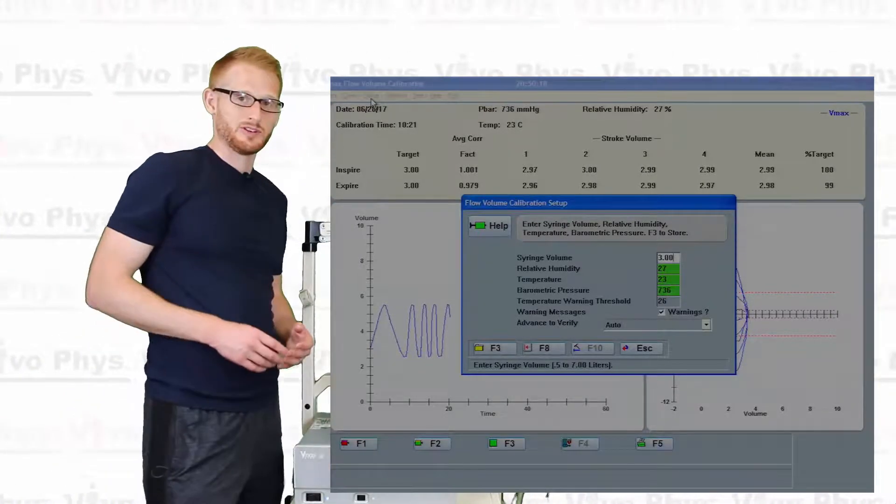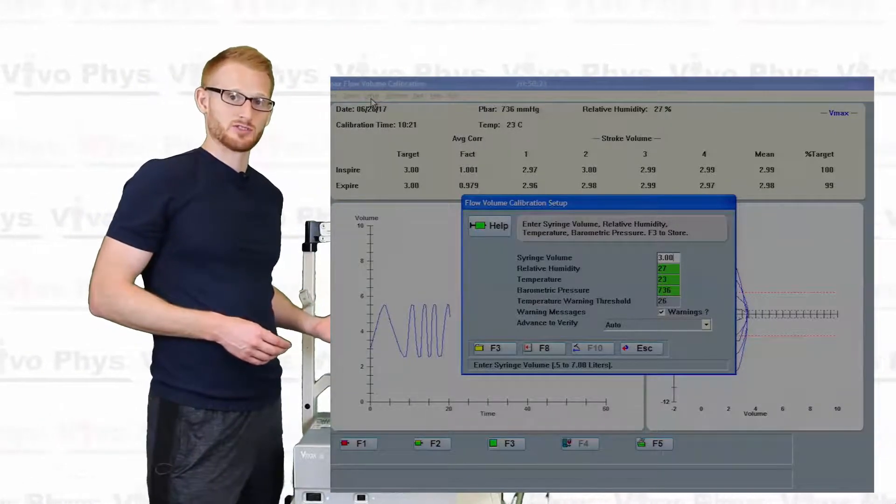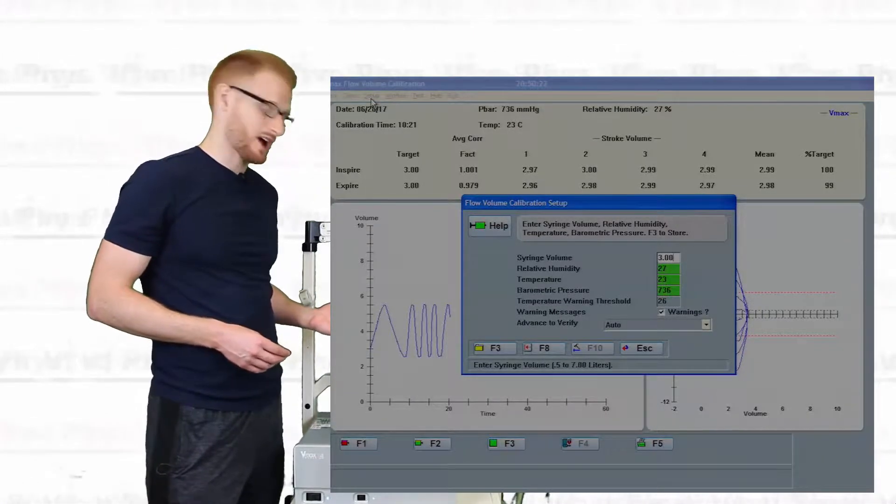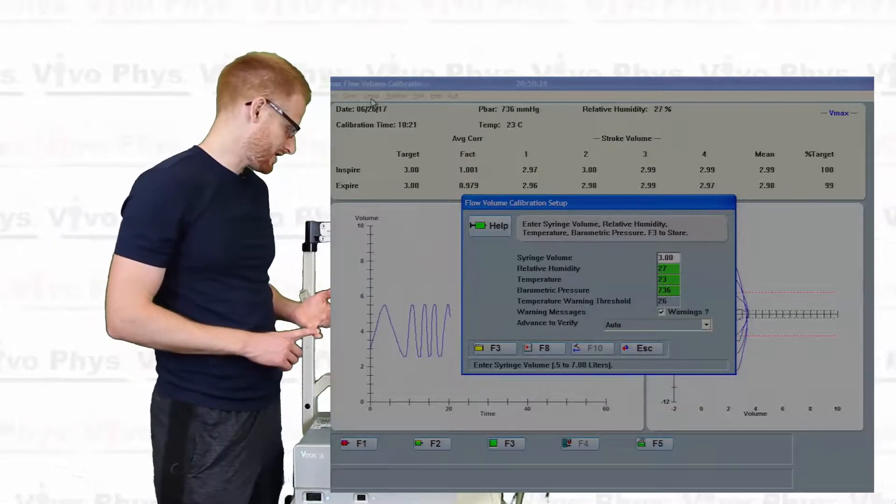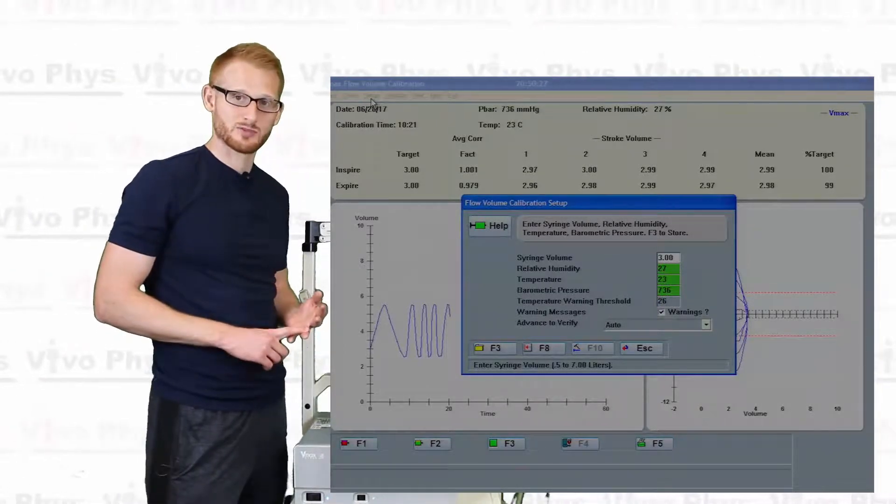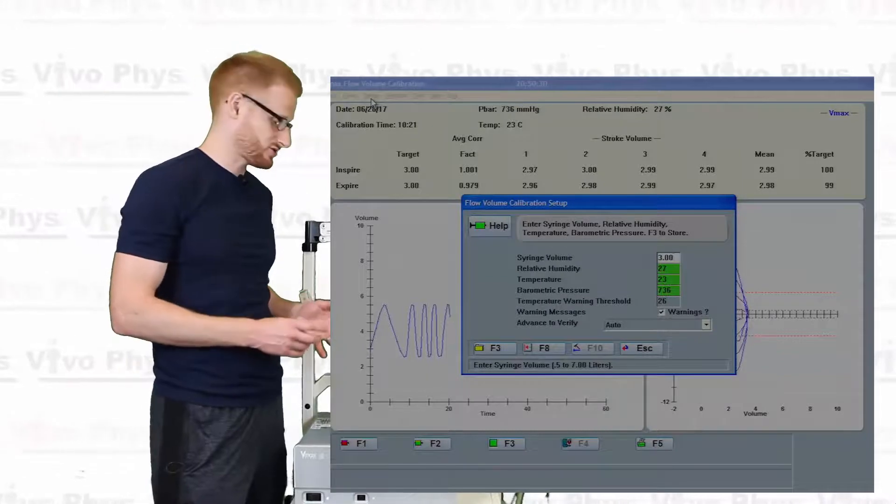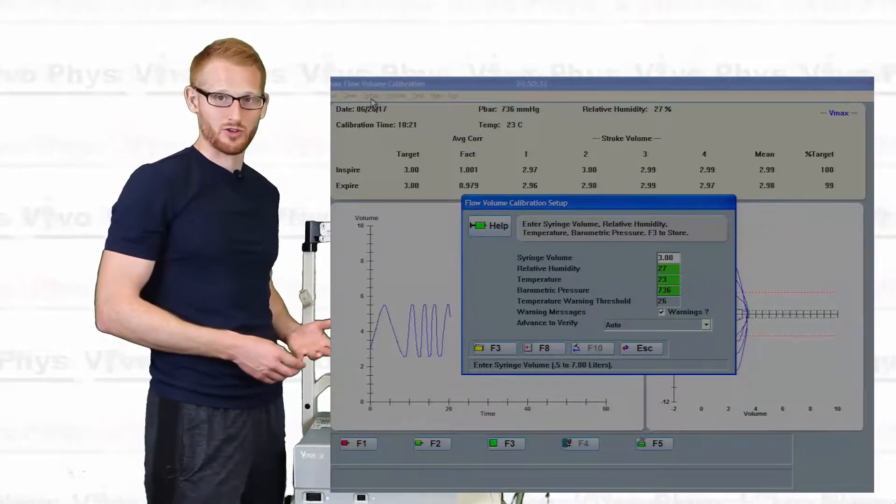And from the setup window, we can see the different parameters I was just talking about. So I've already set two of these. I've already done the temperature and the barometric pressure, but I'm going to go ahead and put in the humidity now so you can see how to do it. It's the same for all of those.